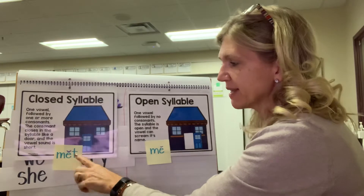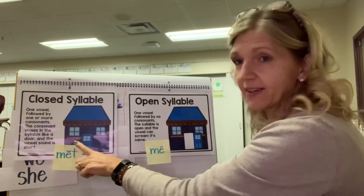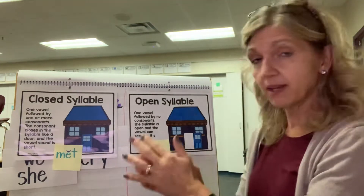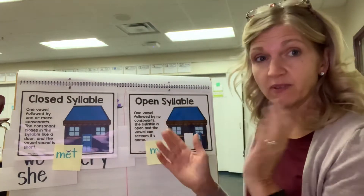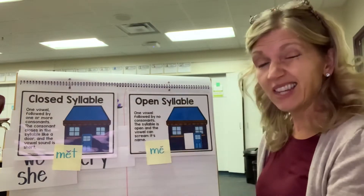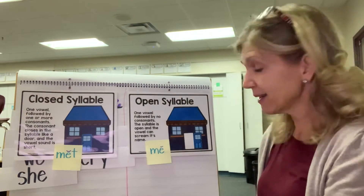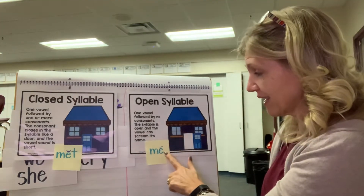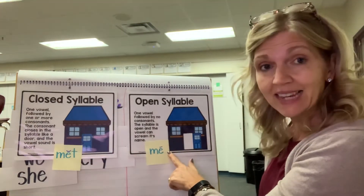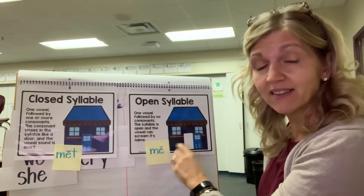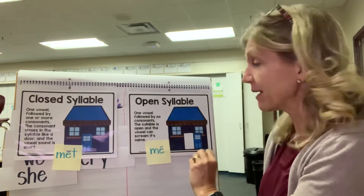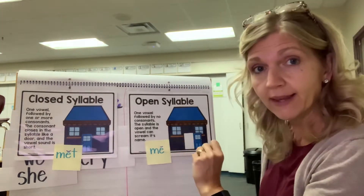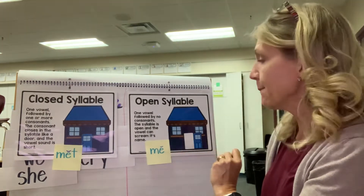Take the word 'met.' But if I take that T off, if I don't have a T there, then it leaves the space after the E open. It's an open space after the E, and then the E can say its full name — it makes that strong long E sound: 'me.'